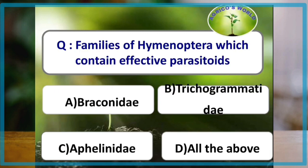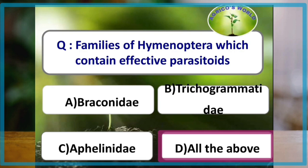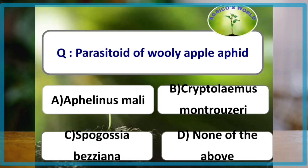Families of Hymenoptera which contain effective parasitoids are Braconidae, Trichogrammatidae, and Aphelinidae — all three belong to the order Hymenoptera and are effective parasitoids. The parasitoid of woolly apple aphid from family Aphelinidae is Aphelinus mali.